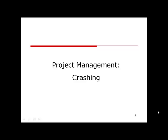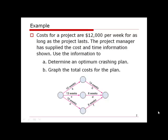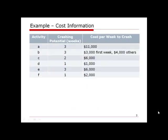We will introduce how to do project crashing through an example. We have the cost information for a given project where the cost is $12,000 per week. We are given the activity relationships, duration of each activity, and on the next page the crashing information. We need to determine the optimal crashing plan and calculate the total cost.